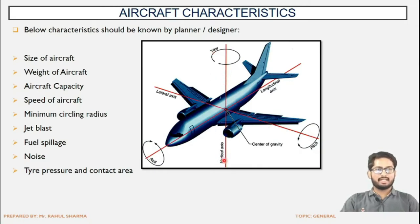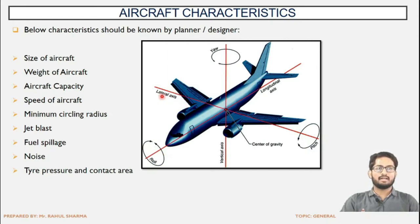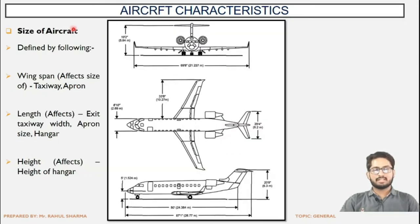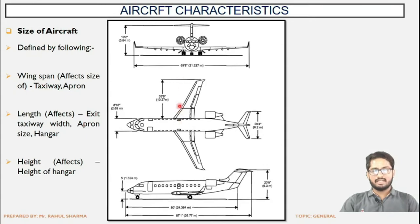Yaw is along the vertical axis, roll is along the longitudinal axis — front and back — and pitch is sideways, along the lateral axis perpendicular to the longitudinal axis. Let us begin with the size of the aircraft, which are the dimensions defined by the wingspan. What is the extent of the wingspan? It will affect the taxiway and the apron, because ultimately the apron will be housing the aircraft.